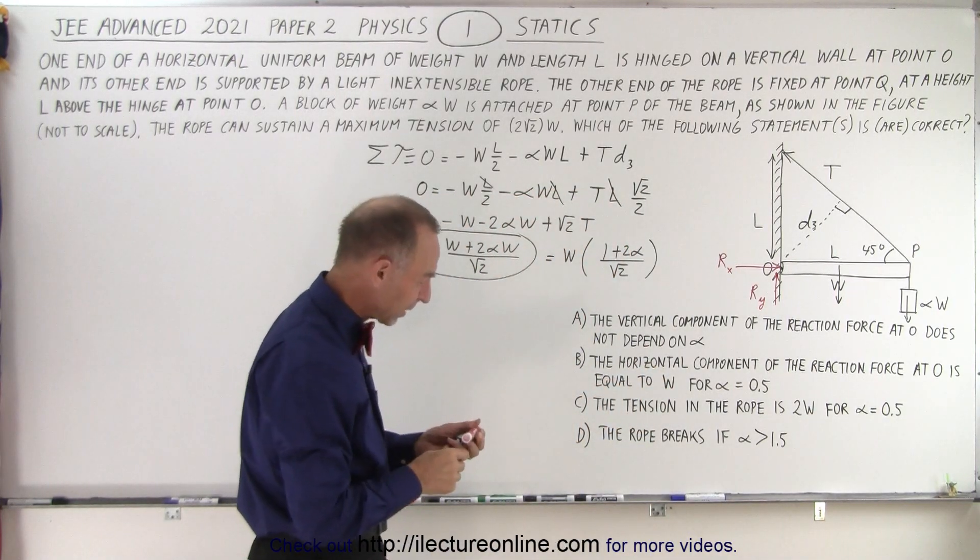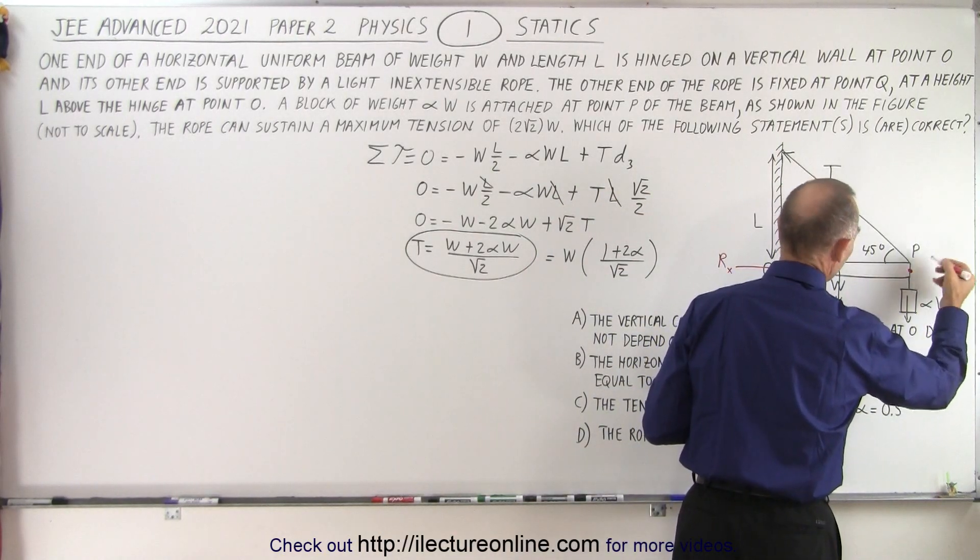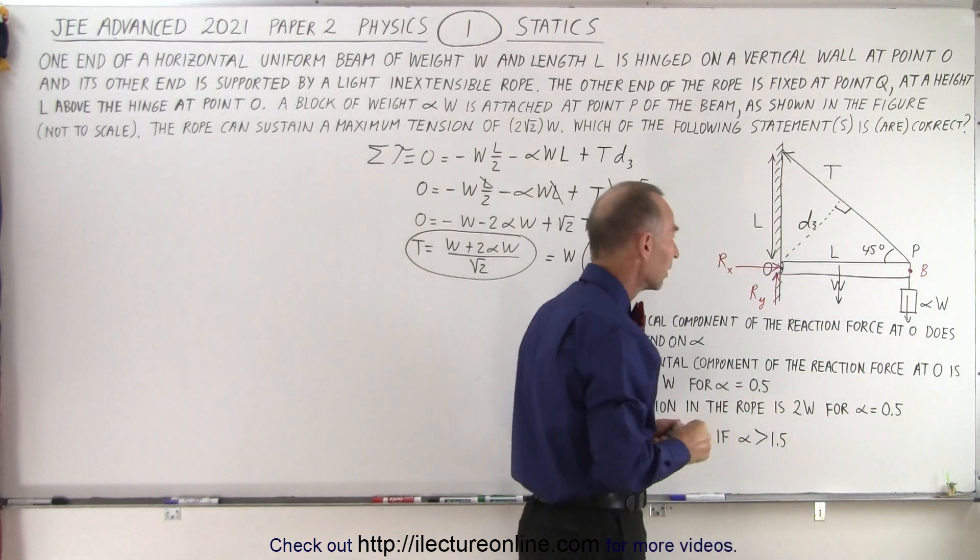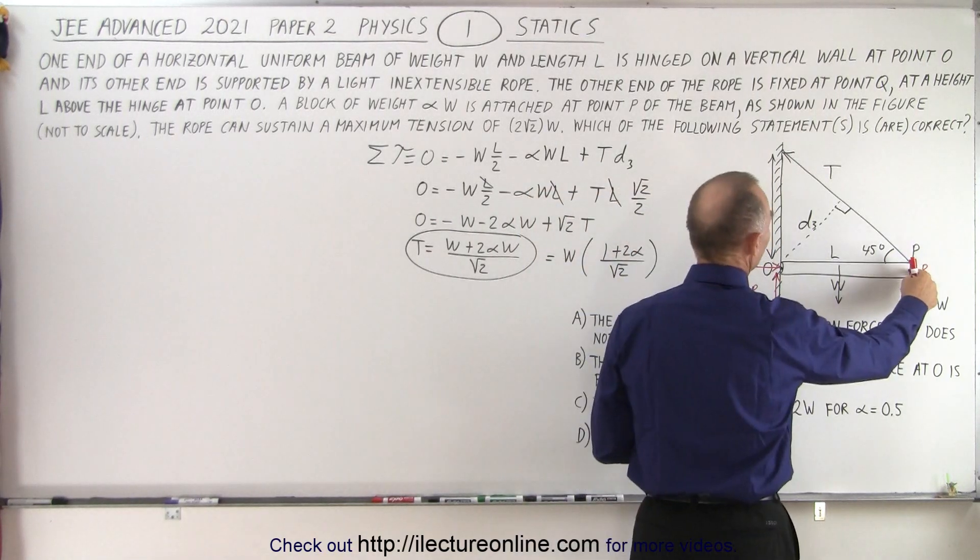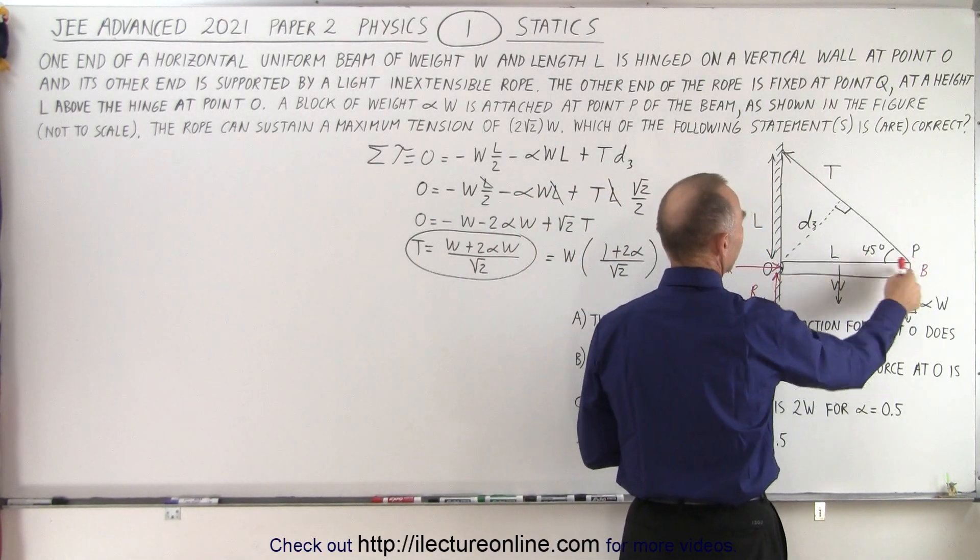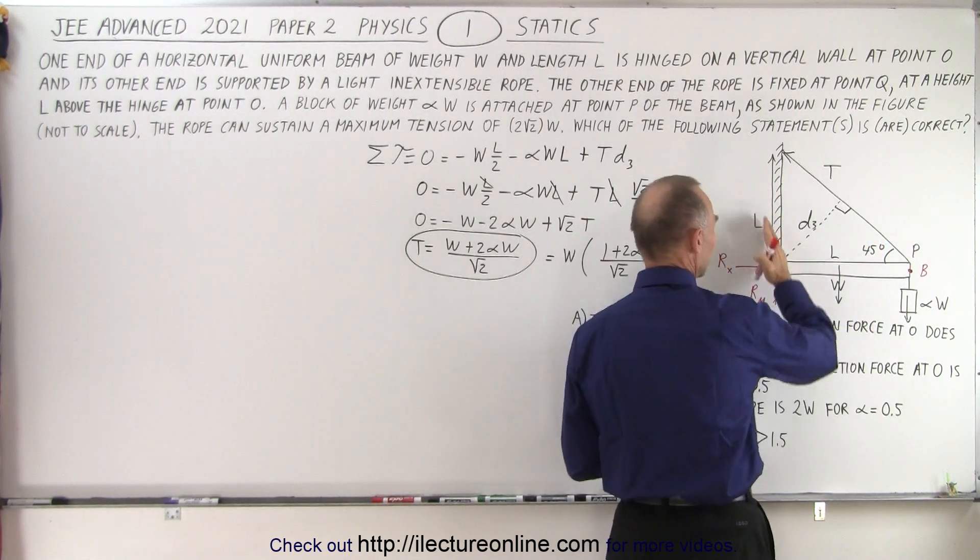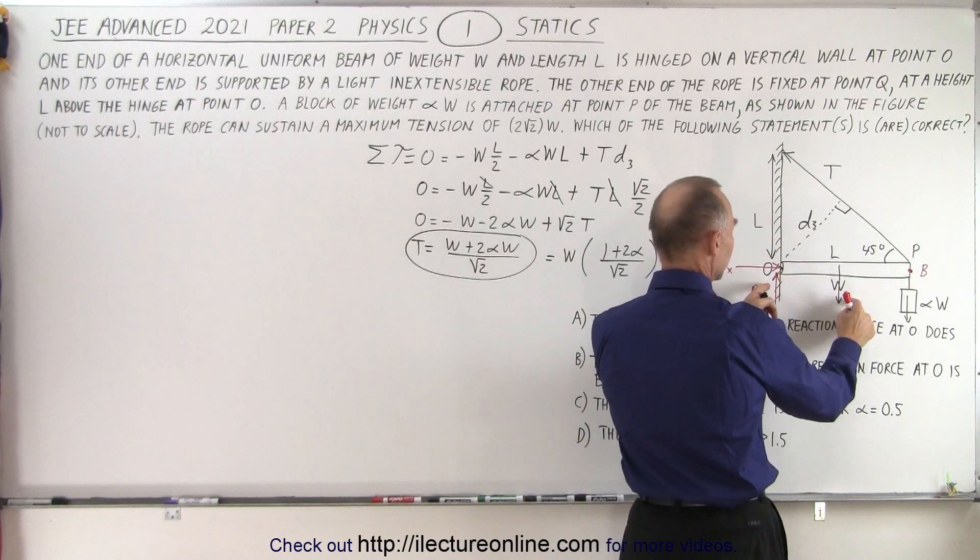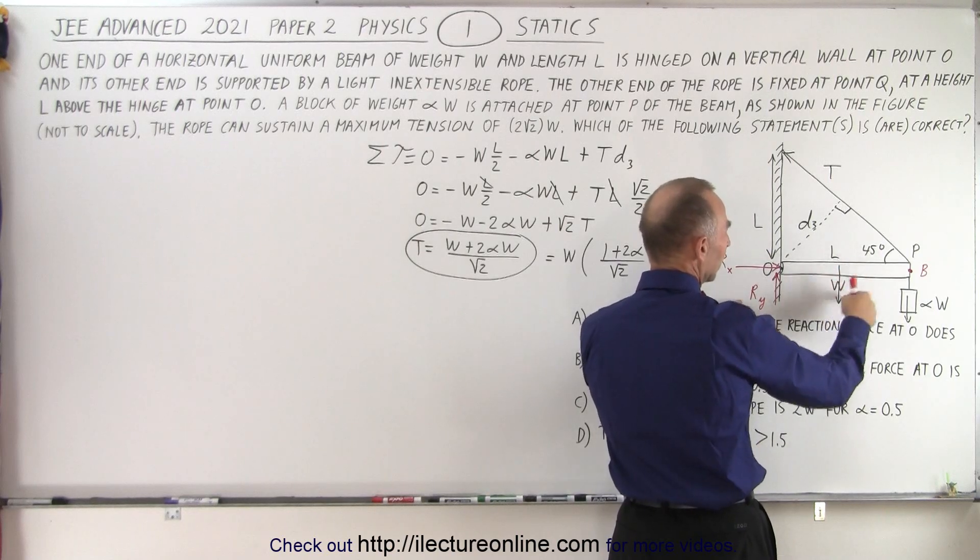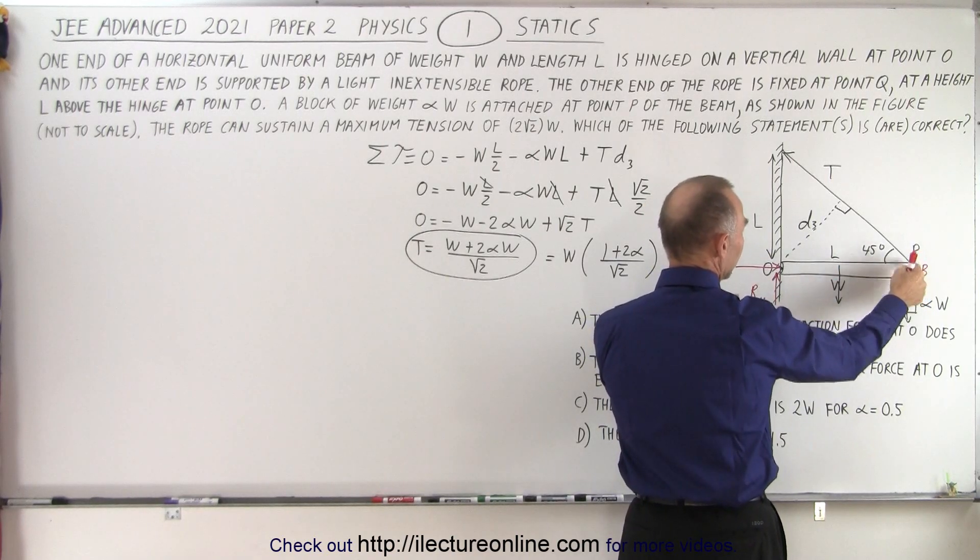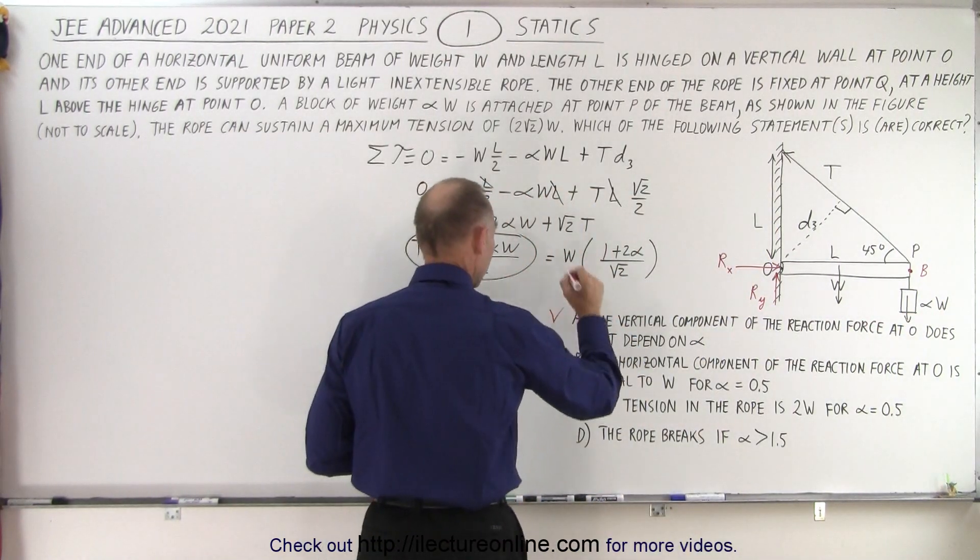The first one deals with the vertical component, which is R sub Y of the reaction force, and it says here that it does not depend on alpha. Well, let's see if that is true. What if we pick the pivot point right there? Let's call this pivot point B. Notice that if we put the pivot point there, there's only two forces acting relative to this pivot point that cause torque: the weight of the beam pushing the beam this way, and the reaction force pushing back this way. So the reaction force in the vertical direction only depends on the weight of the beam if we put our pivot point there. Therefore, we can say that it does not depend on alpha. So A would be a correct statement.